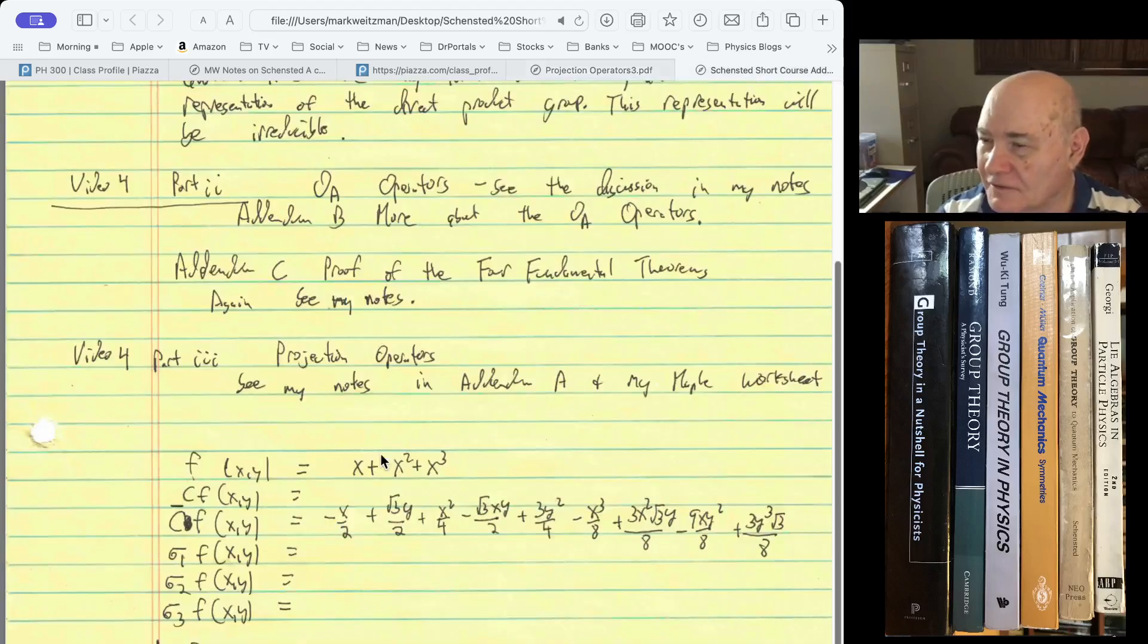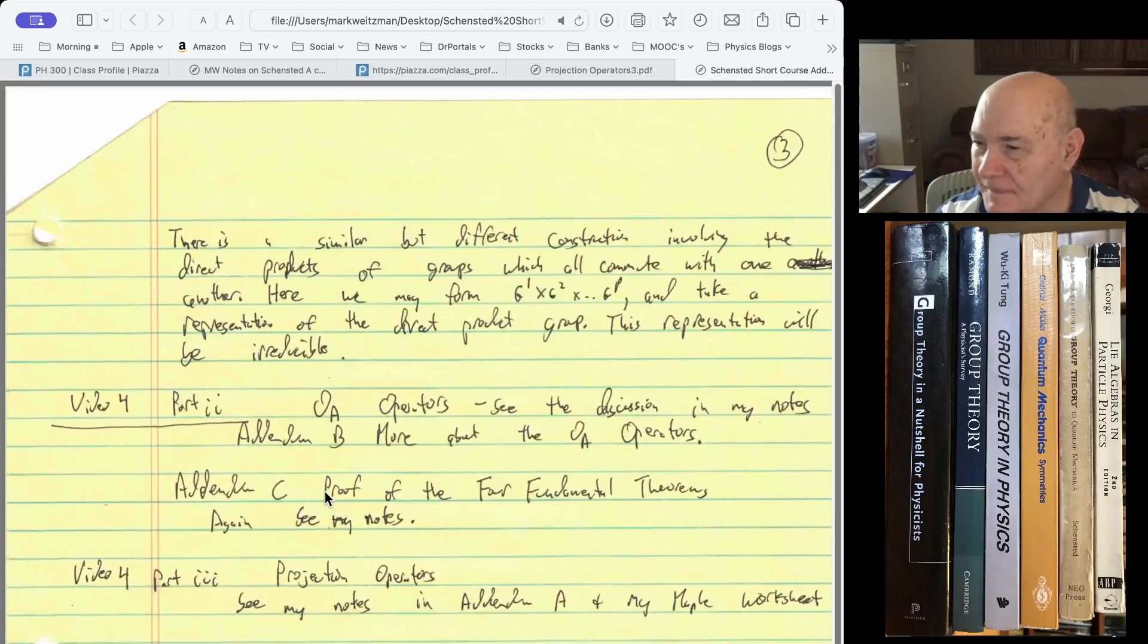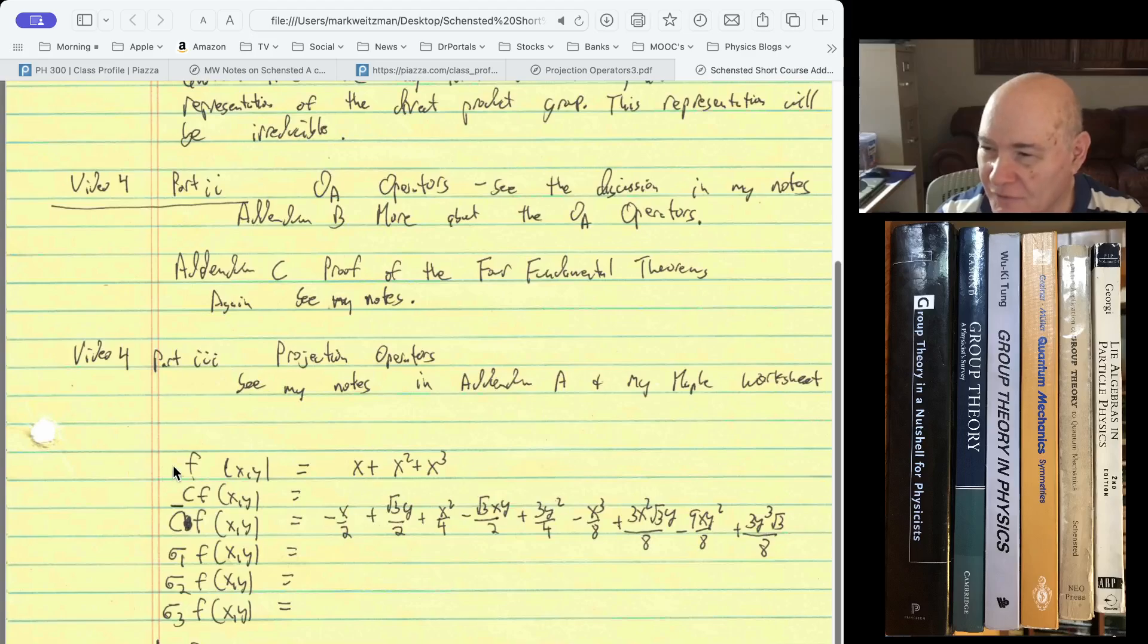Just as a check, I put the coefficients of all the polynomials for the six functions. These are the six functions that I got on projections, and these are the polynomial terms. Like this is x, y, x squared, x, y, y squared.